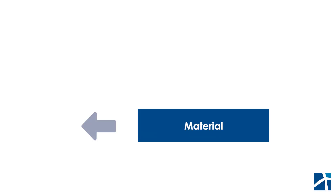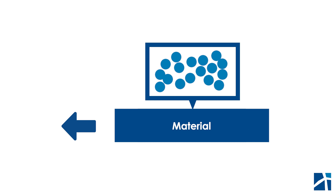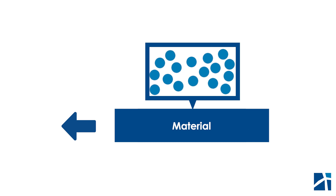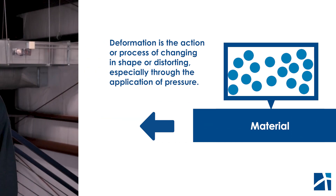In a simplified explanation, the force applied to one end of the material stretches atomic bonds within the material. When a force is applied, these bonds are stretched and the atoms experience separation, thus undergoing deformation. This deformation, at an atomic level, creates tension throughout the material, resulting in the tension force that counteracts the applied force.